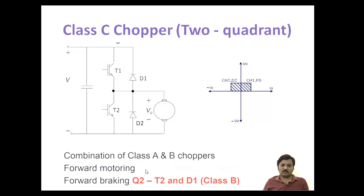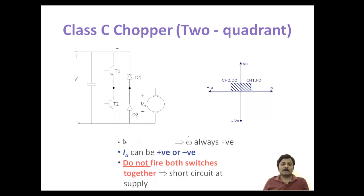For forward motoring operation (quadrant 1), T1 and D2 will operate — similar to a class A chopper. Voltage V_A is always positive, and I_A can be positive or negative. An important precaution: T1 and T2 cannot be switched on at the same time, because both being on simultaneously would dead short-circuit the source and damage it.